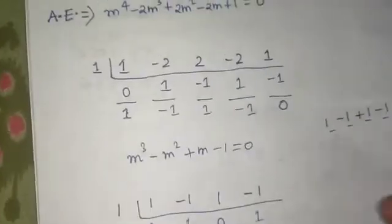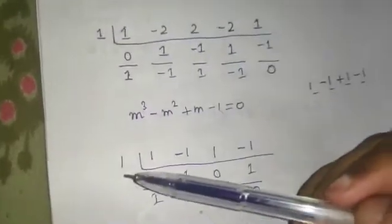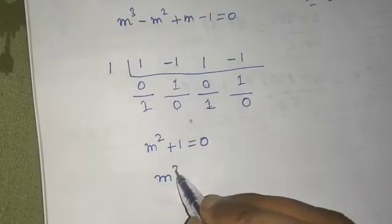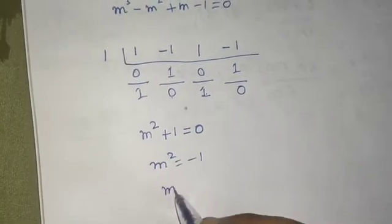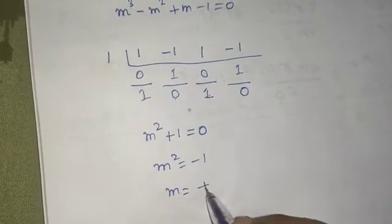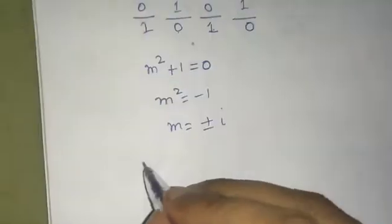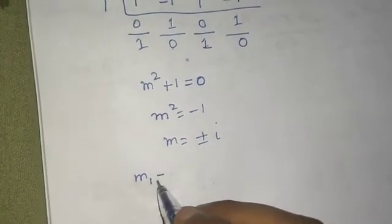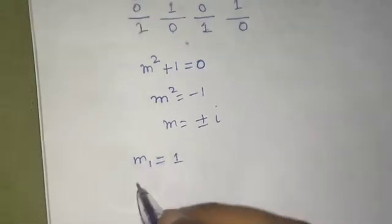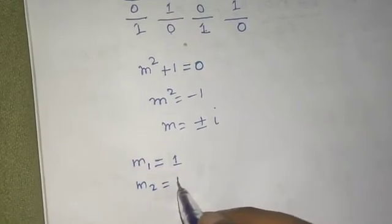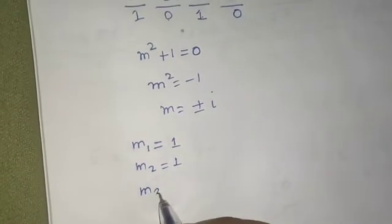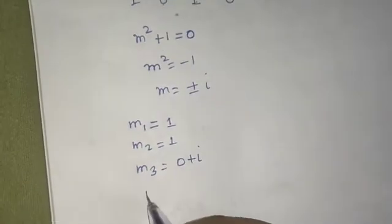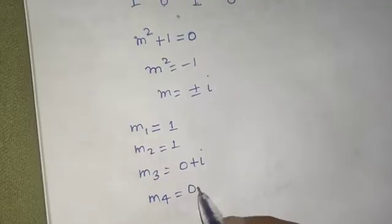We have now reached a quadratic: m squared plus one equals zero. So m squared equals minus one, giving m equals plus or minus iota. The four values of m are: m₁ equals one, m₂ equals one, m₃ equals zero plus iota, and m₄ equals zero minus iota.